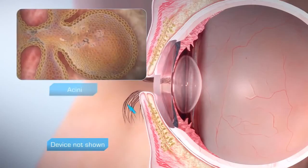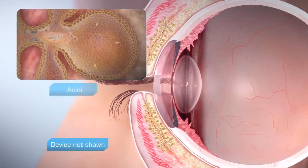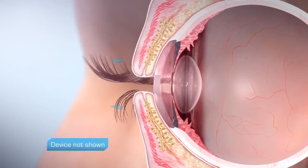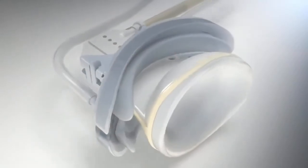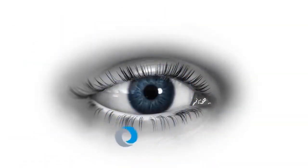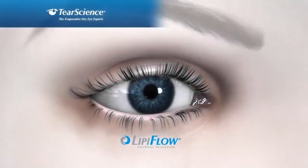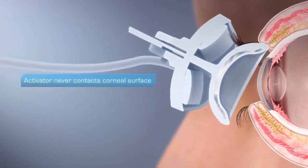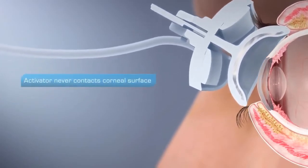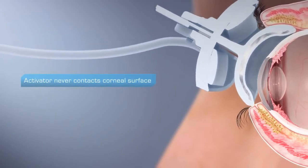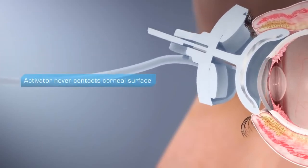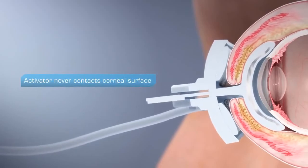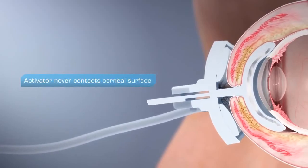This action moves the blockage towards the gland opening and evacuates the contents. During this process, stagnant gland tissue may be removed from the glands. The LipiFlow activator is inserted by gently tucking the scleral interface between the upper lid and the ocular surface temporally, then guiding the lower part of the scleral interface under the lower lid and centering the activator by closing the lids.